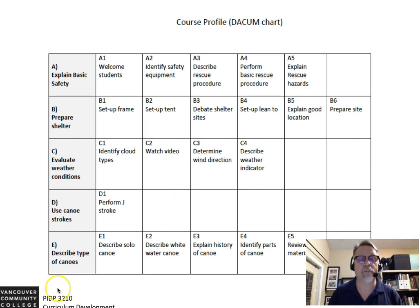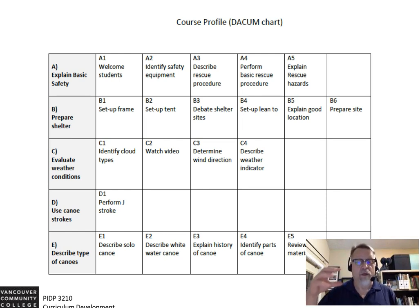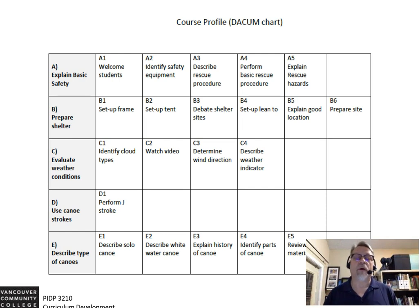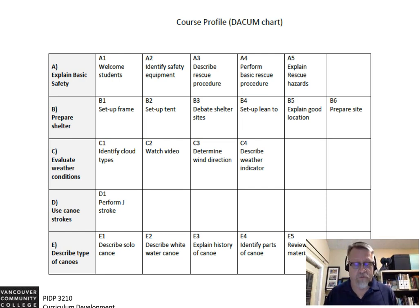Row D has only one objective, and performing a single stroke is only one activity a student will do — it doesn't constitute using canoe strokes. There have to be more strokes being performed. You have to have a minimum of three objectives within a sequence. Ideally, you want to have four or five to really make it work effectively.